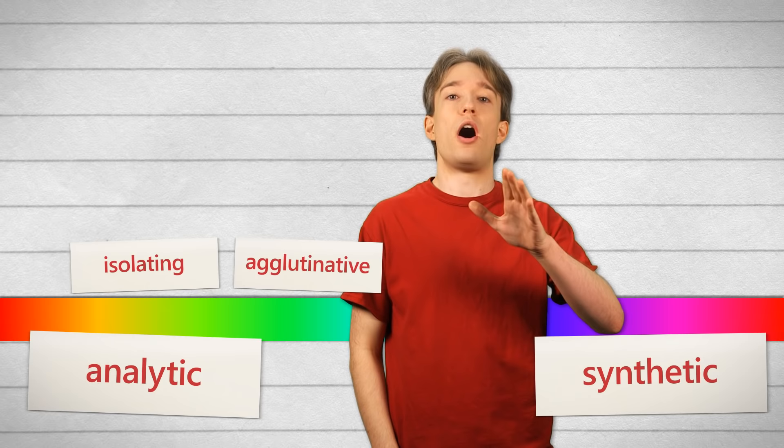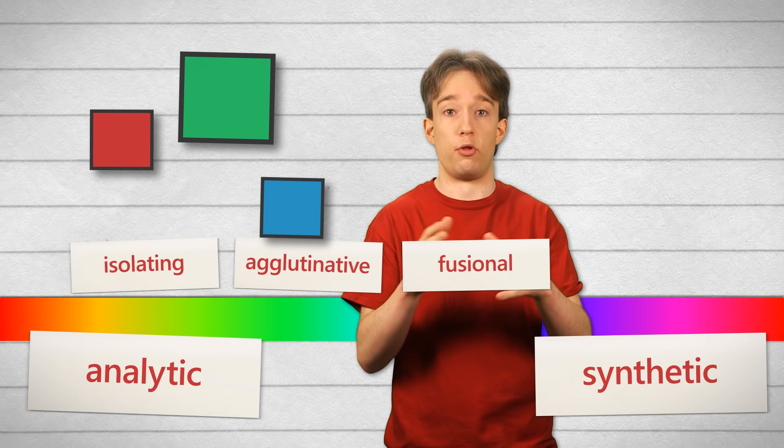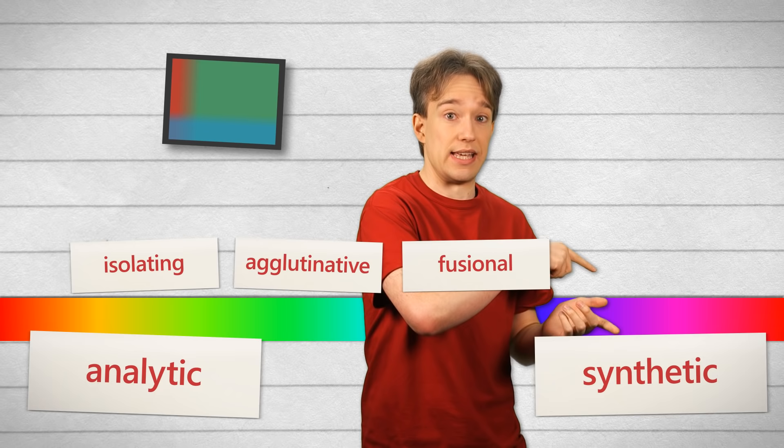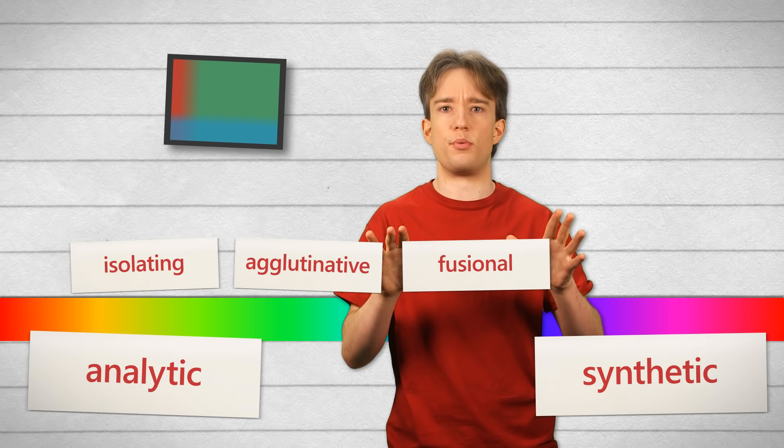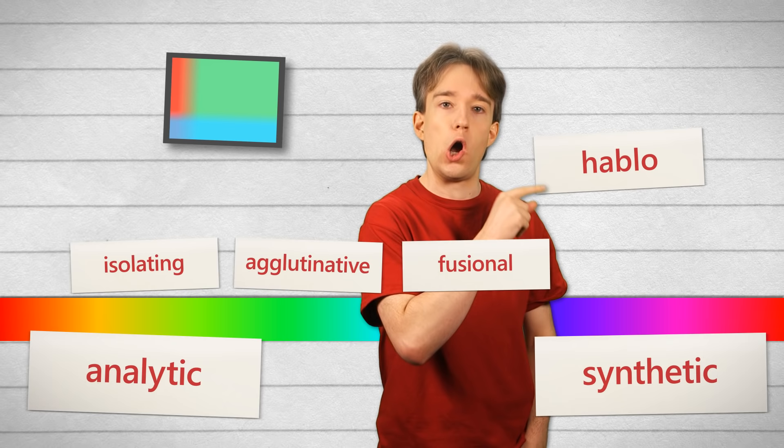Next up are the fusional languages. They work in the same way, assembling bits to make a full word with all the meaning you want. But now the bits you're adding affect the parts you've got already, tweaking how it looks or how it sounds. Not only that, but each of the bits you're adding can have multiple different meanings attached to it — tense, number, person — all sorts of things can be coded with just one sound attached to a word. Take hablo in Spanish. That O morpheme? It means first person, singular, present, indicative. That's a lot of meaning in a very short sound.